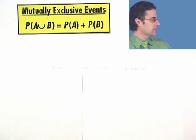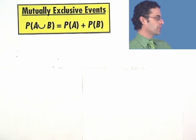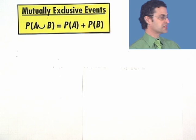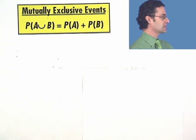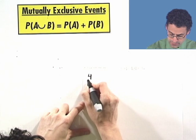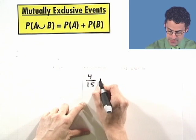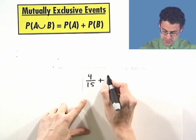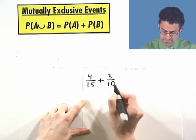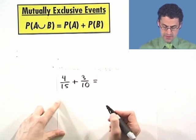So what's the probability that we're going to see a free drink or a free corndog, since they're mutually exclusive? We just take the probability of a free drink, which we know is 4 over 15, and we add to it the probability of a corndog, which we know is 3 over 10. Now we need to add them. Well, how do we add them? We get a common denominator.